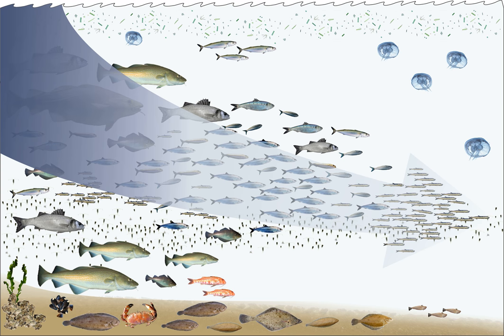Fishing down the food web is the process whereby fisheries in a given ecosystem, having depleted the large predatory fish on top of the food web, turn to increasingly smaller species, finally ending up with previously spurned small fish and invertebrates. The process was first demonstrated by fisheries scientist Daniel Pauly and others in an article published in the journal Science in 1998.